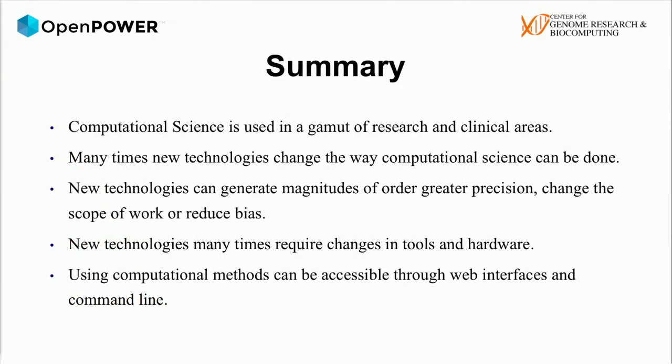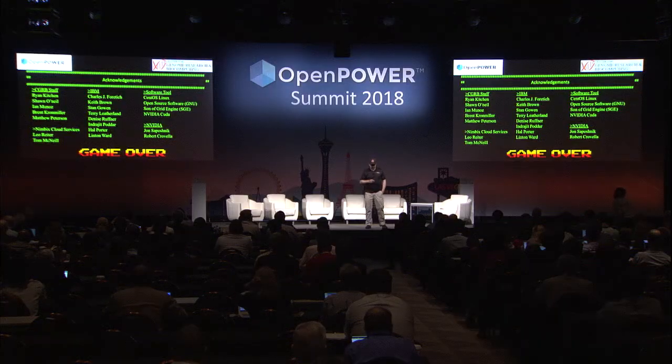In summary, computational science really does run a gamut of research. We don't really know where we're going to go tomorrow, and that's what's exciting — that's what the open Power Platform provides us. It's a pathway to know that we're going to succeed regardless of what comes at us. New technologies can change computational science; new technologies require changes in tools and hardware. We have to be able to implement this new hardware, and it's our responsibility to lower that activation energy and allow users to take advantage of it almost like they don't even know they're in there.